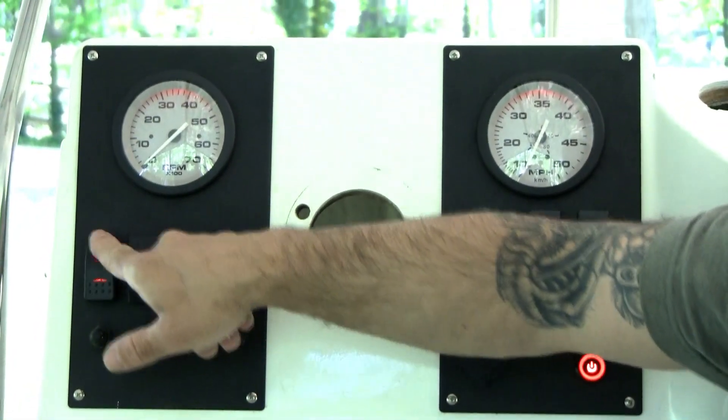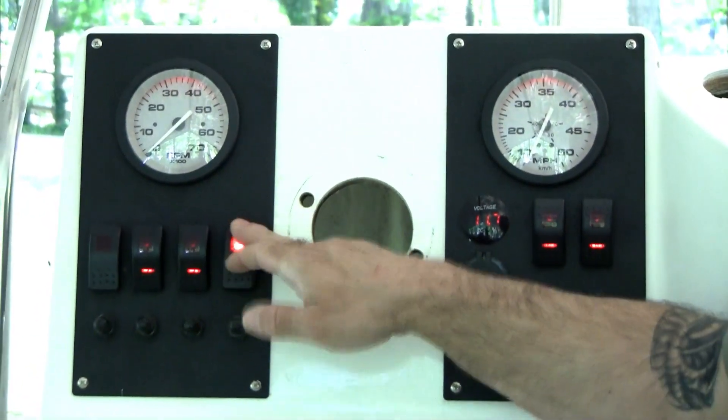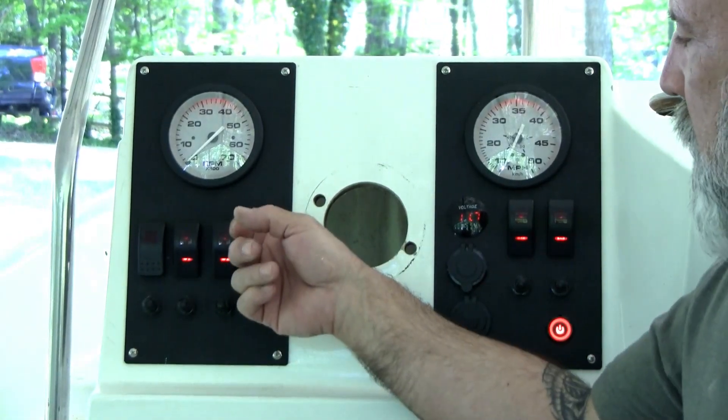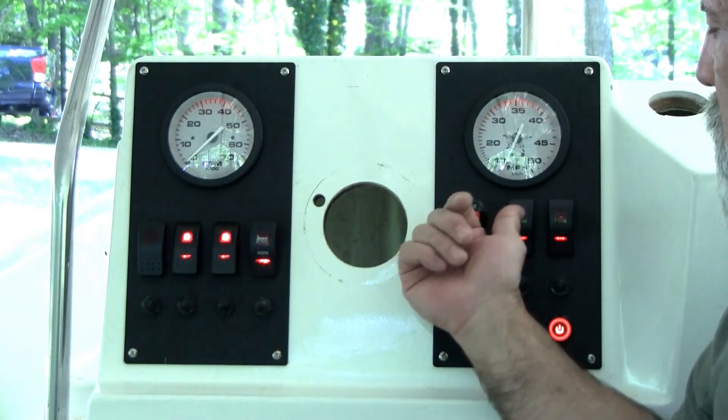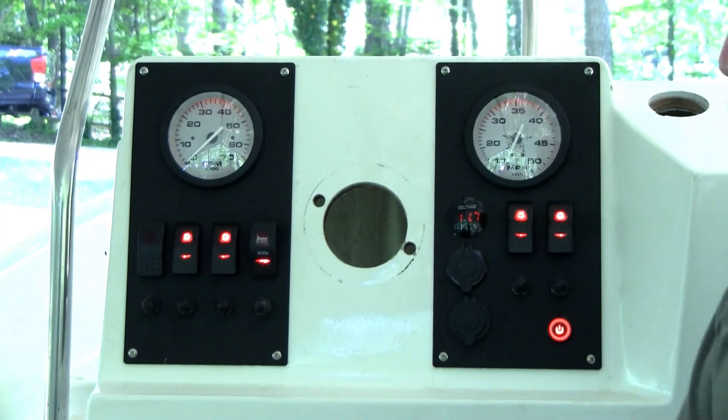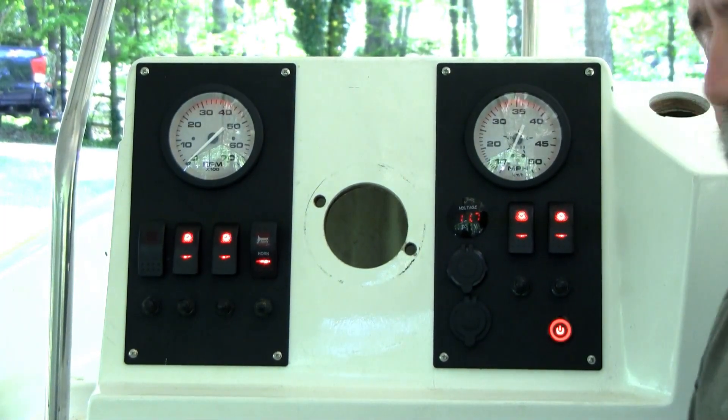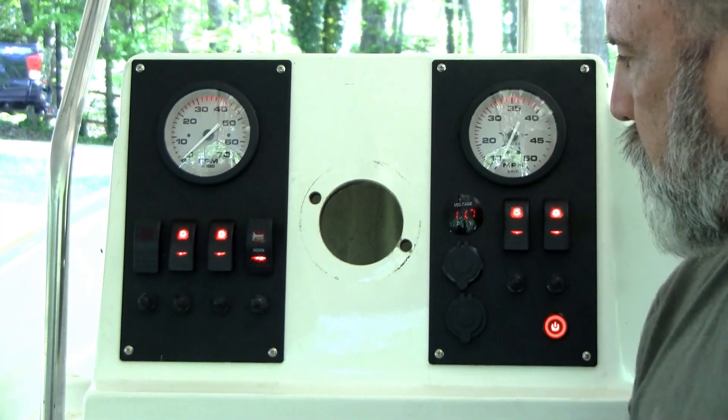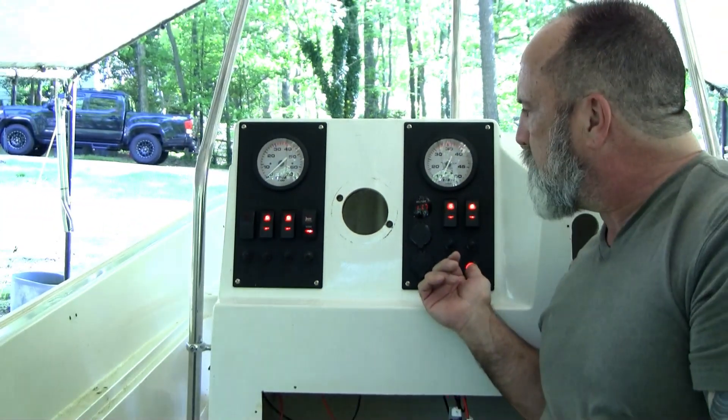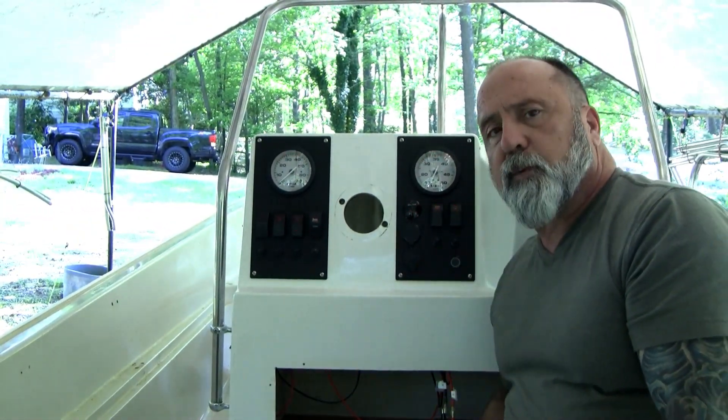I've got bow light, anchor light switch, horn switch which I added. Everything else is just really auxiliary switches. So we've got this whole thing wired up and there's still some temporary wiring in here, but overall I'm really pleased with the way this came out.